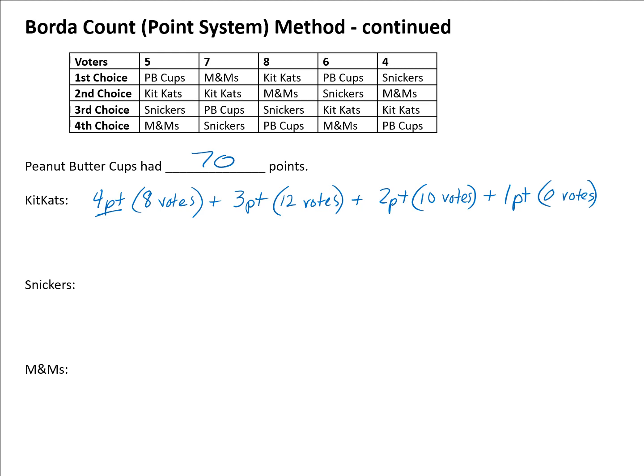With a scientific calculator, you can enter: four times eight plus three times twelve plus two times ten plus one times zero. Kit Kats had a total point value of 88 points, so Kit Kats is currently in the lead.